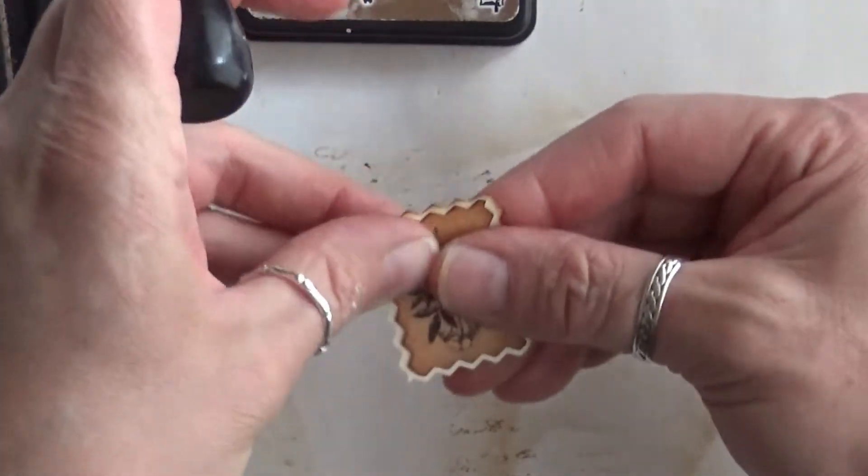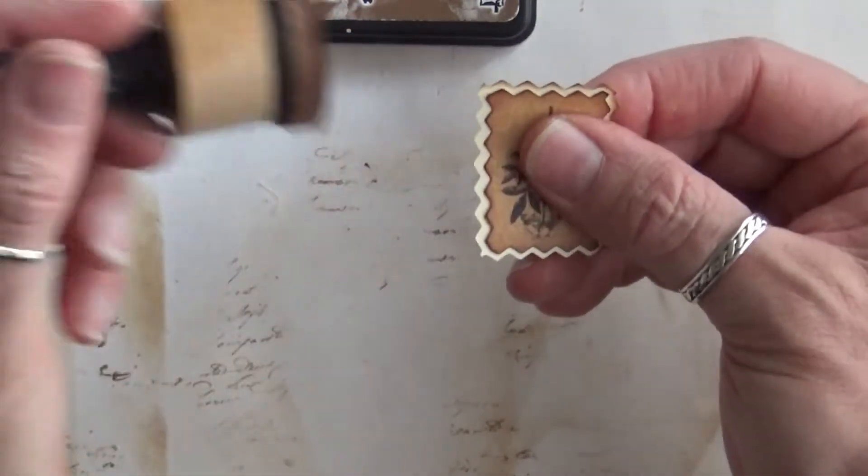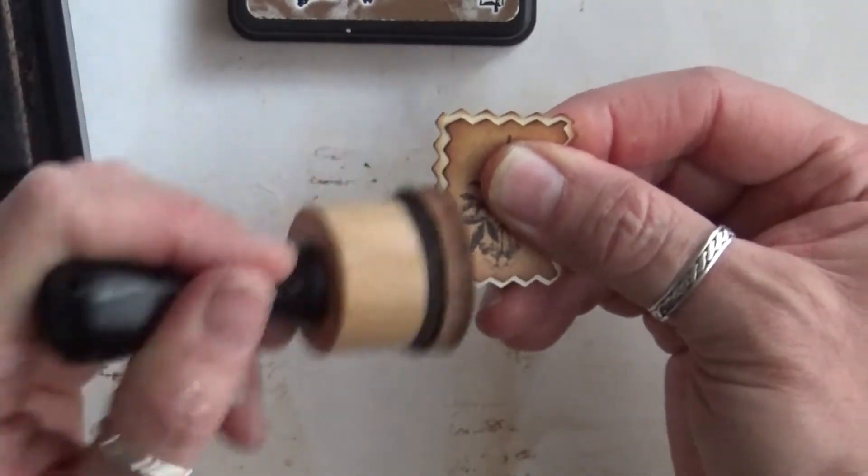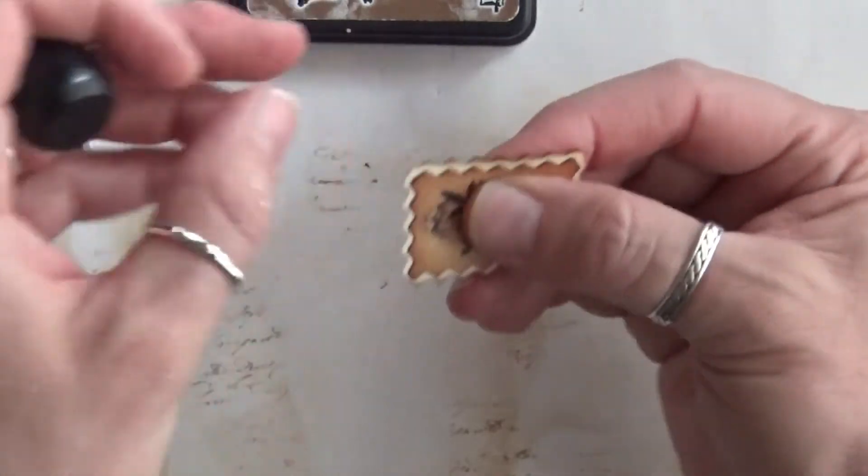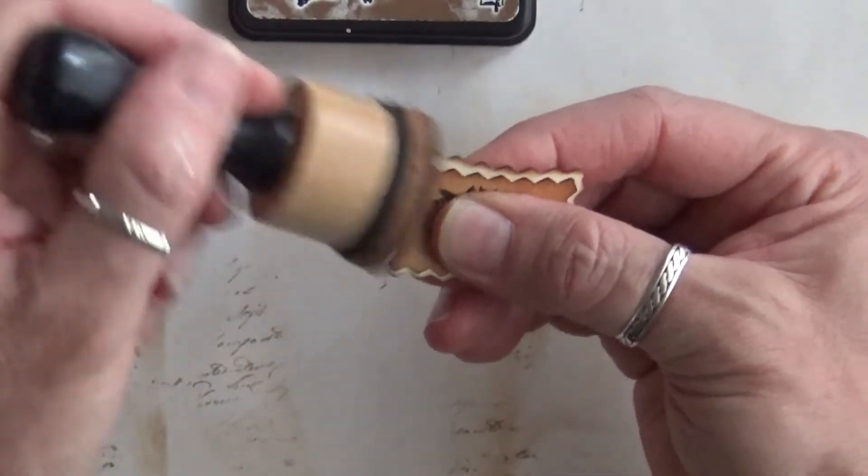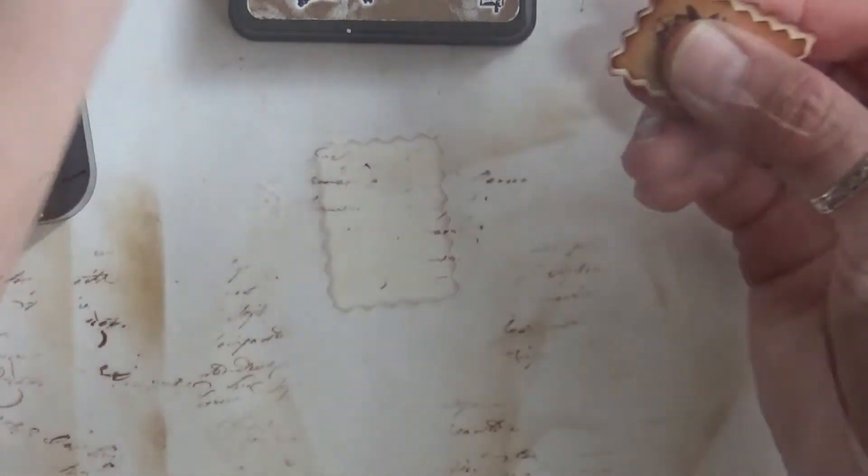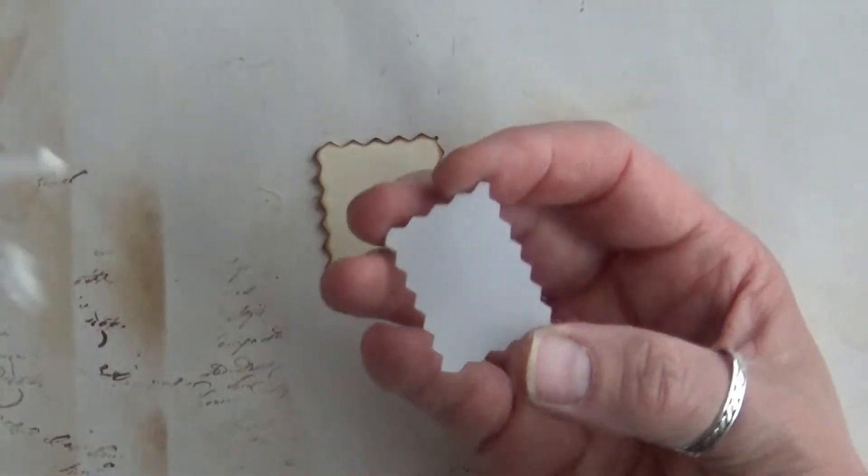And then have that cream be in between the botanical paper and the outer edge, just so it'll give it a little bit more contrast and really make it pop out. So now I'm just going to go ahead and glue them together, just like I did the others.